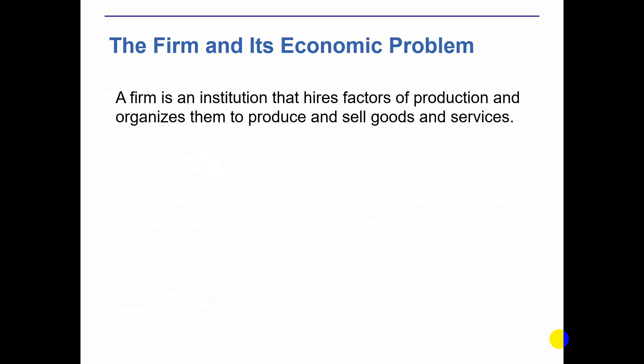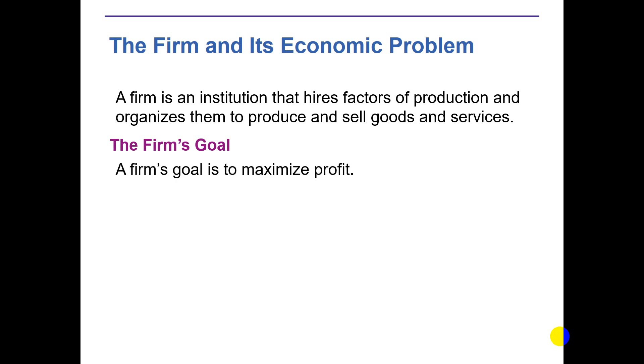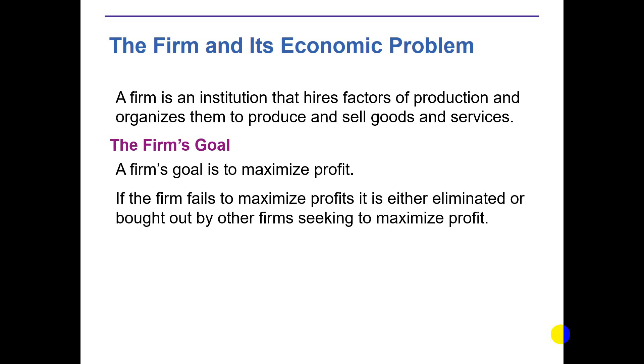The first thing is what is the firm and what kind of problem it has. A firm is an institution that hires factors of production and organizes them to produce and sell goods and services. The ultimate goal of any business firm is to maximize profit. If the firm fails to maximize profit, it is either eliminated or bought out by other firms seeking to maximize profit.